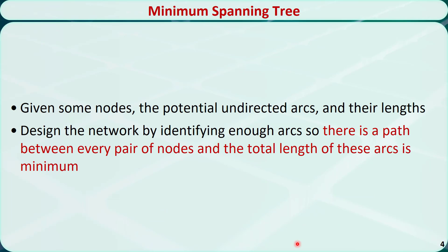With that in mind, now let's see what a minimum spanning tree is. Given some nodes with potential undirected arcs and their lengths, we want to design the network by identifying enough arcs so there is a path between every pair of nodes and the total length of these arcs is minimized. The solution to this problem is a minimum spanning tree.